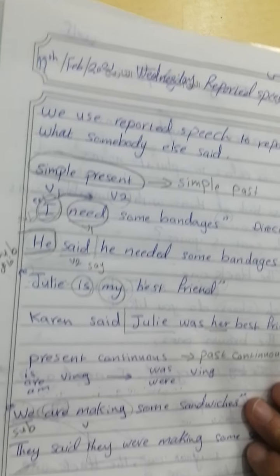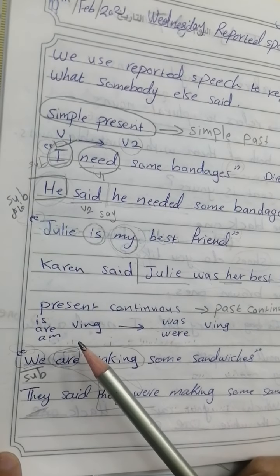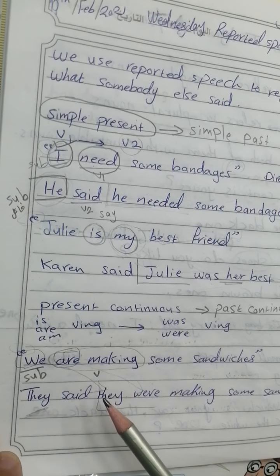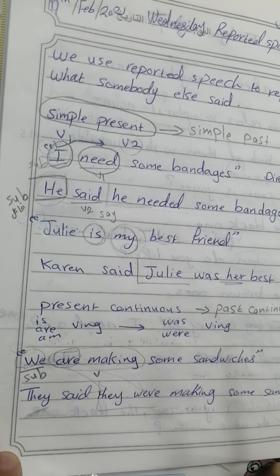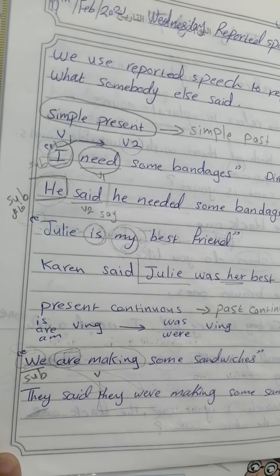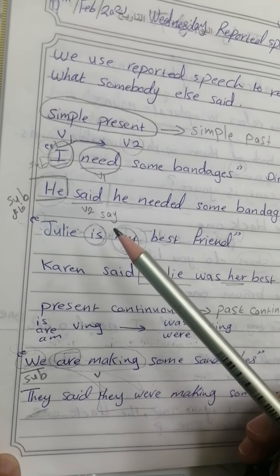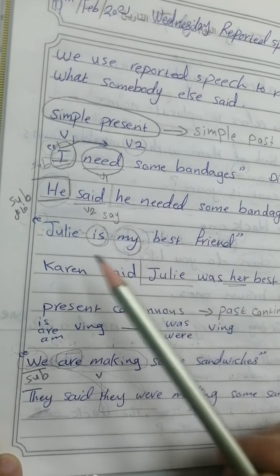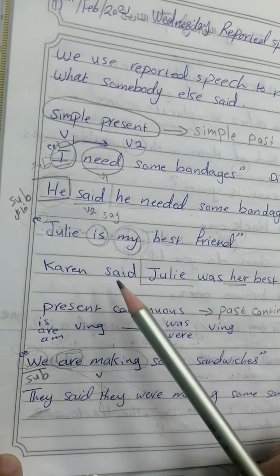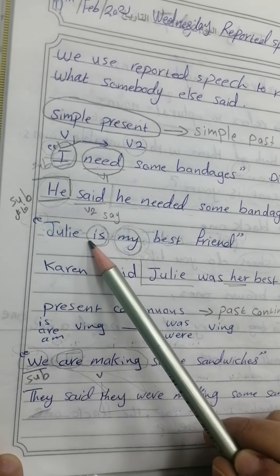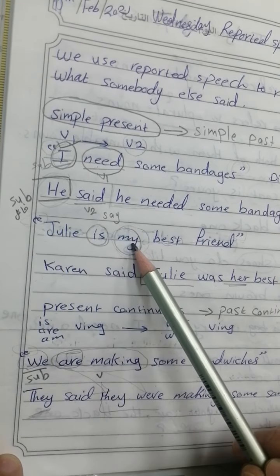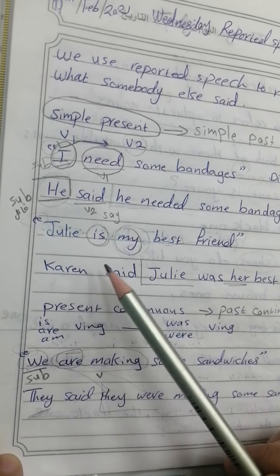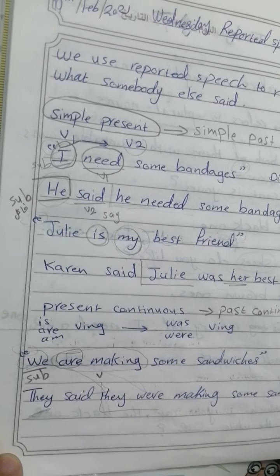And present continuous, which is verb+ing, بدها تصير past continuous: was + verb+ing. For example: Julie is my best friend → Karen said that Julie was her best friend. هير لأنه Karen وليس Julie.